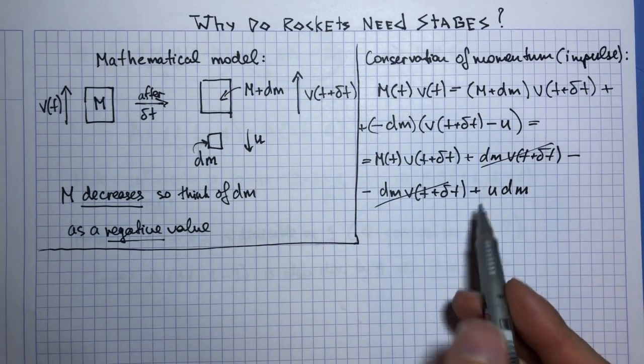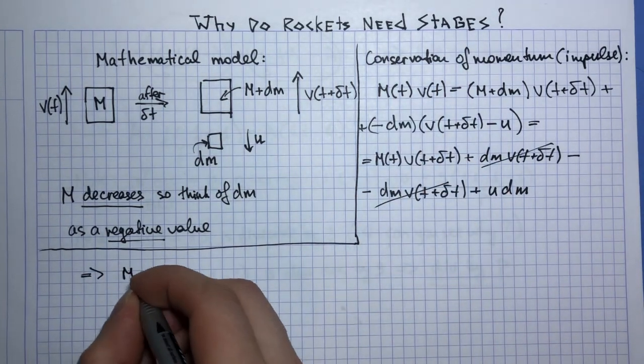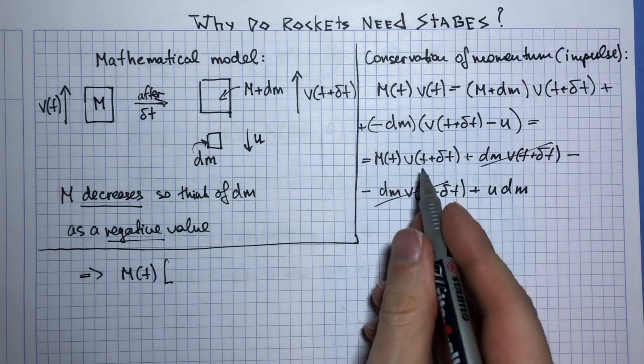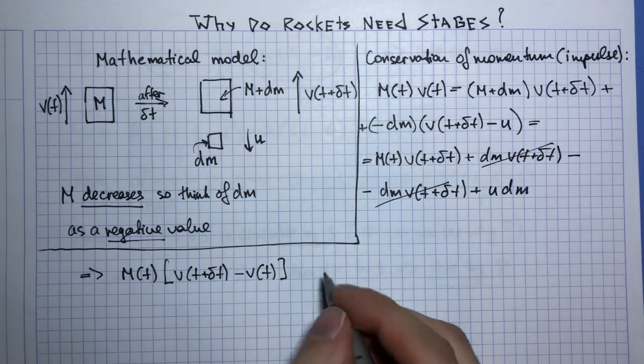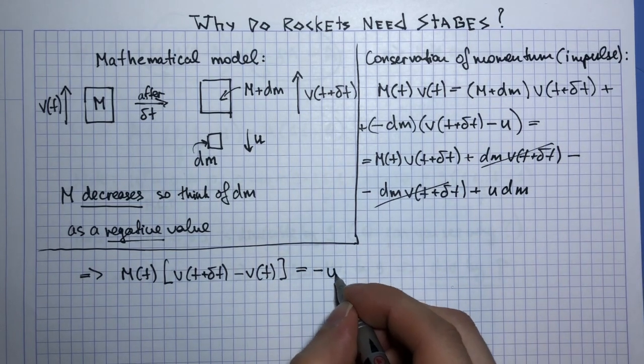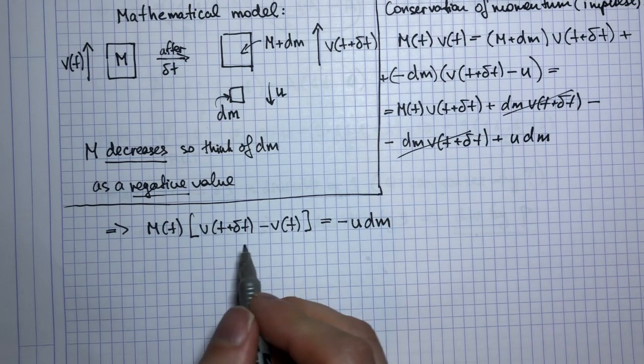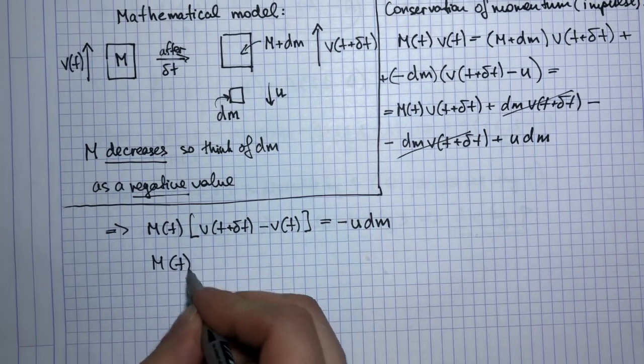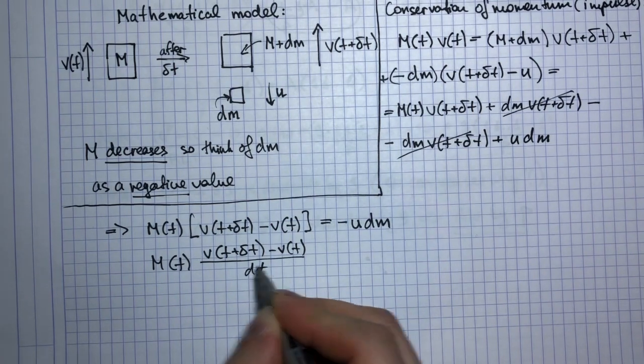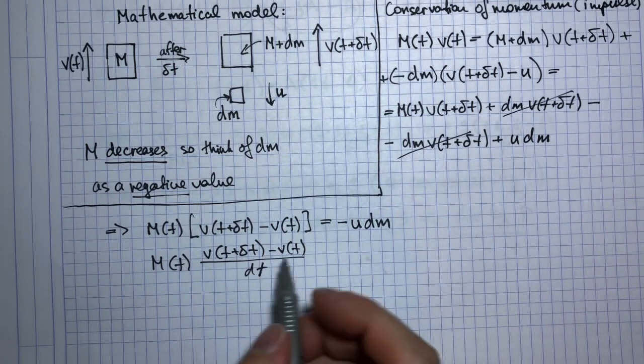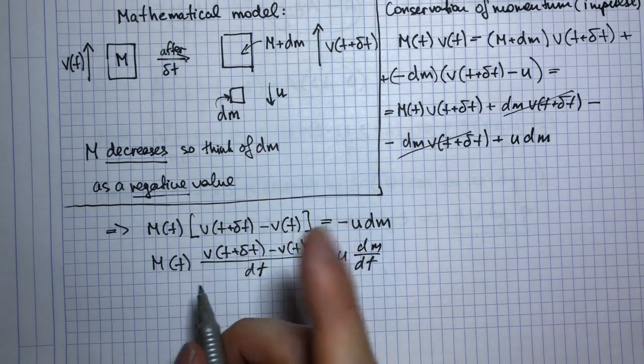And now we need to rearrange the equation. M(t) can be factored out, so we have M(t) times [v(t + delta t) minus v(t)] equals minus u times dm. So now if I divide through by delta t, which is my time increment, I get this fraction and here I get dm/dt.